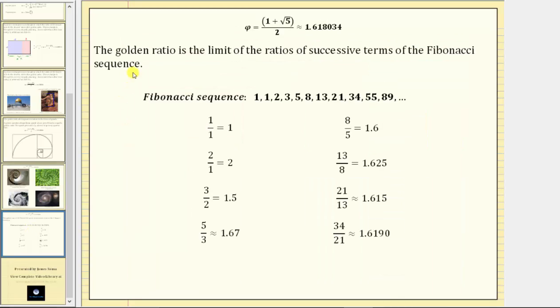And finally, the golden ratio is the limit of the ratios of successive terms of the Fibonacci sequence. The Fibonacci sequence is given here, which is one of the most famous number sequences. If we look at the ratio of successive terms, we begin with one divided by one, which is one.